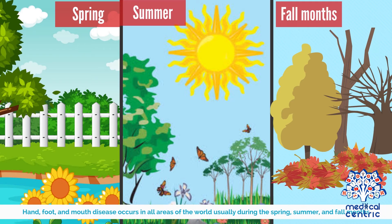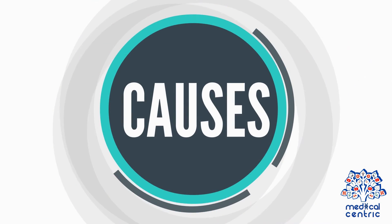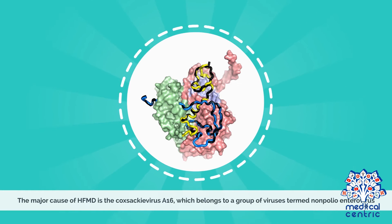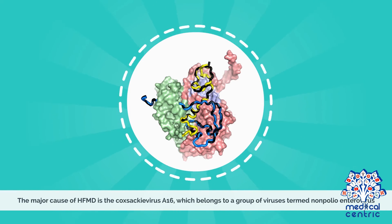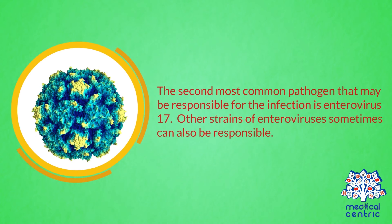Hand, foot and mouth disease occurs in all areas of the world, usually during the spring, summer and fall months. The major cause of HFMD is the Coxsackie virus A16, which belongs to a group of viruses termed non-polio enterovirus. The second most common pathogen that may be responsible for the infection is enterovirus 71. Other strains of enteroviruses sometimes can also be responsible.